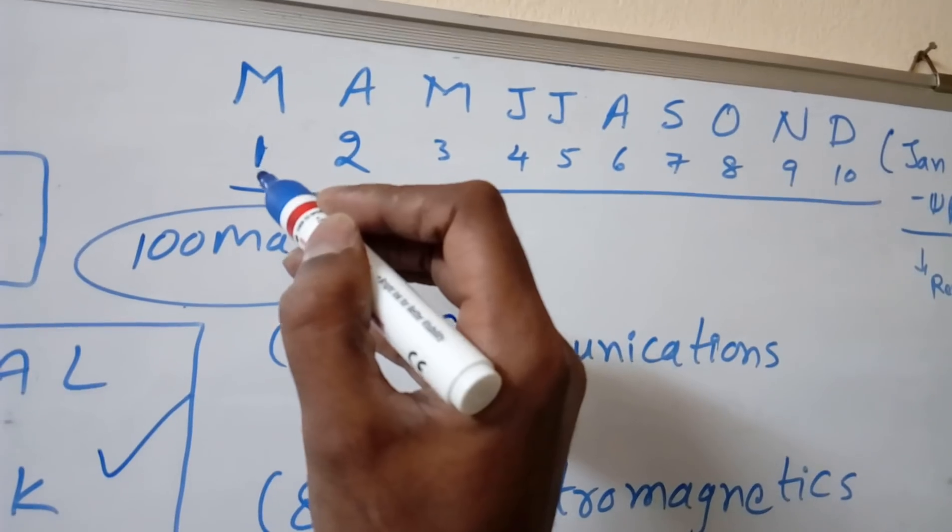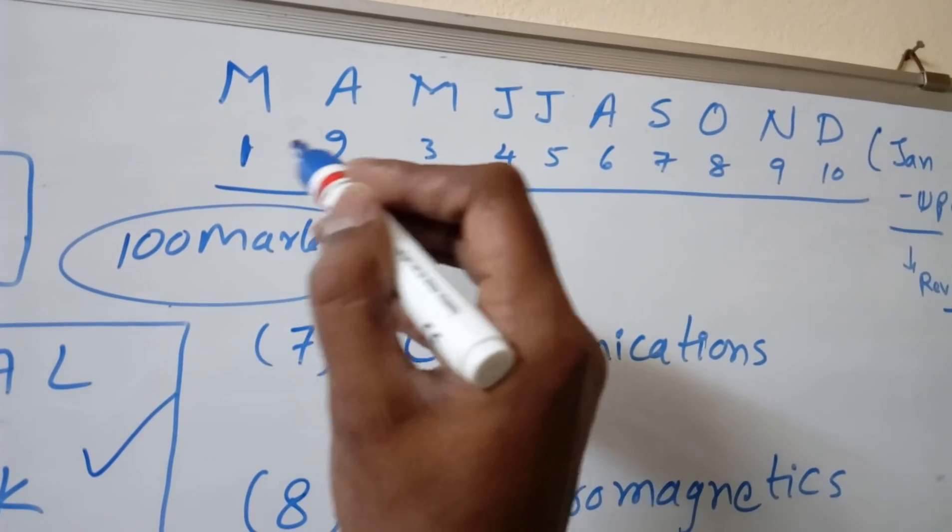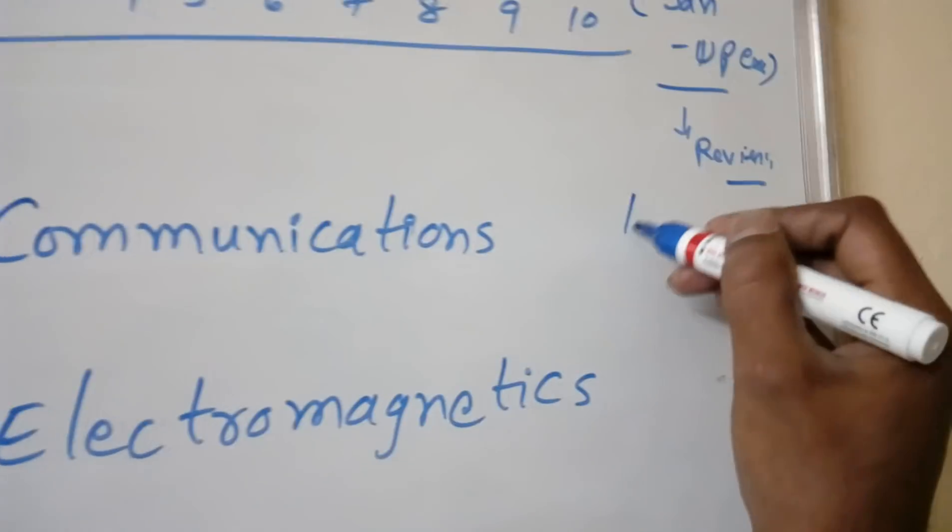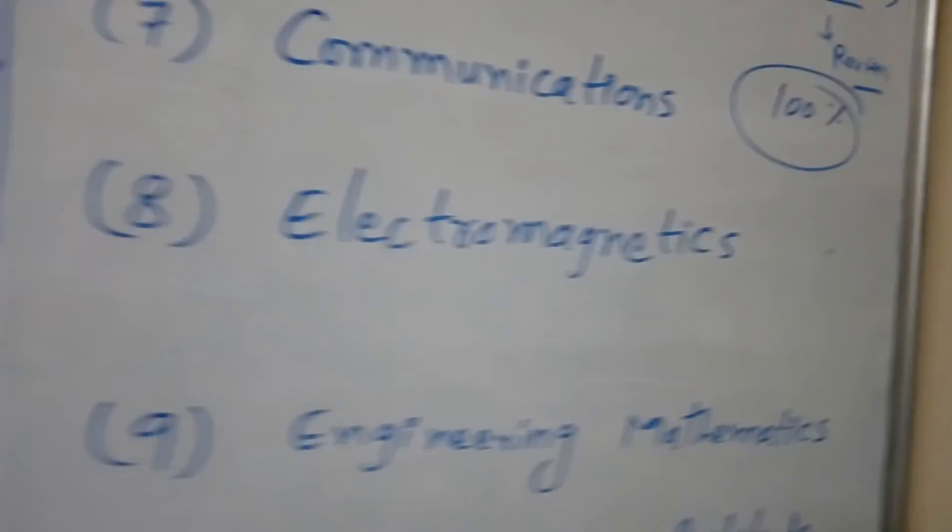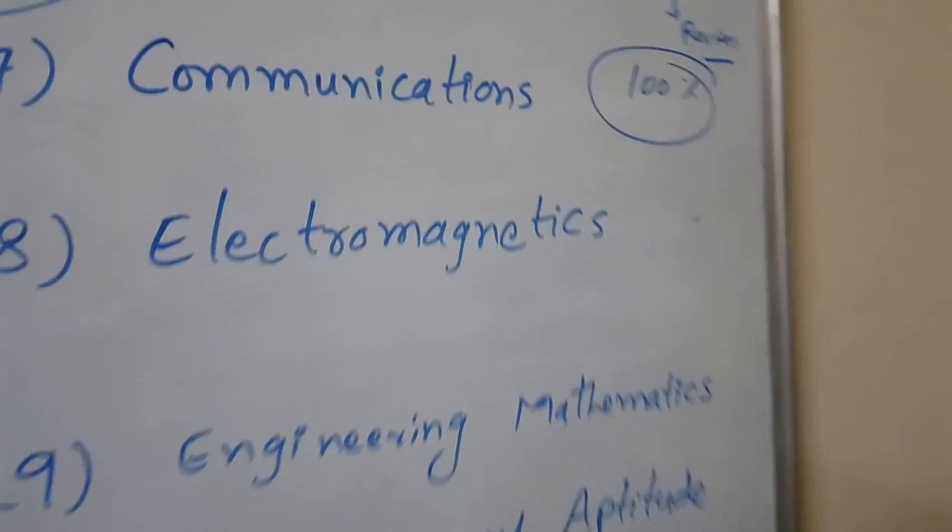Month-wise we will go through each subject. If I start Network Theory and Signals and Systems for one month, the next month you should be 100 percent confident on these two subjects.